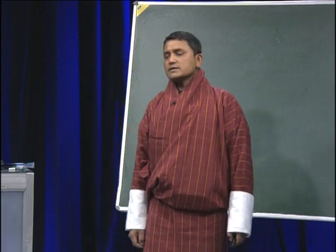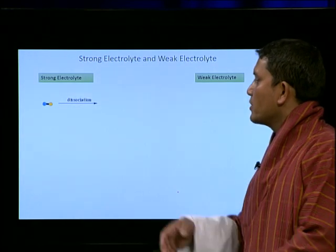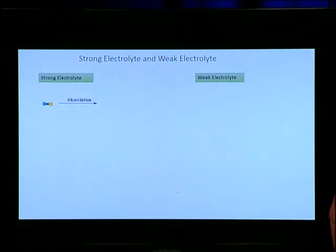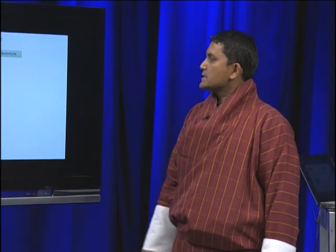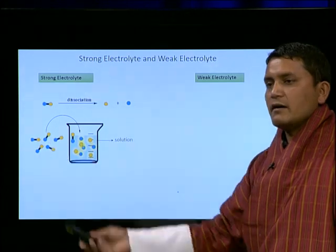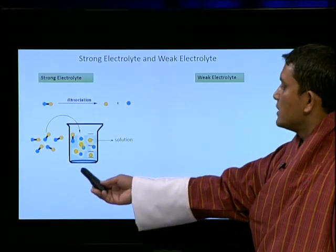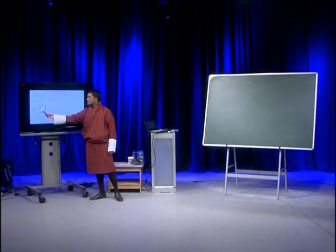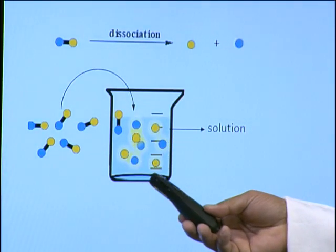Let's look at what we mean by weak acid or weak base, or in other words, we call it as strong electrolyte or weak electrolyte. Strong electrolytes are those substances which, if you dissolve in water, will undergo dissociation and then form ions. If you take five molecules of a substance and dissolve in water, this particular electrolyte will undergo dissociation, and we have more number of molecules which have undergone dissociation to form ions. So this solution will have more number of ions.